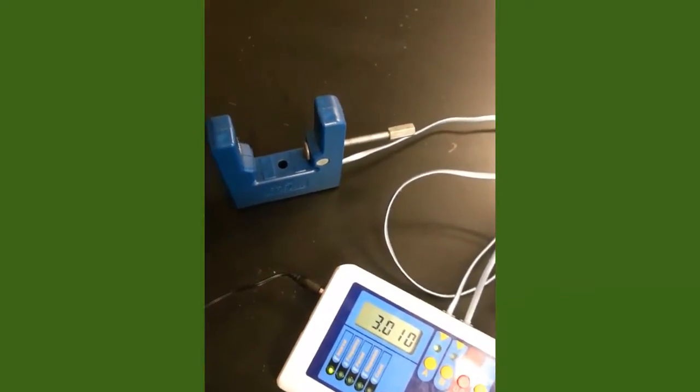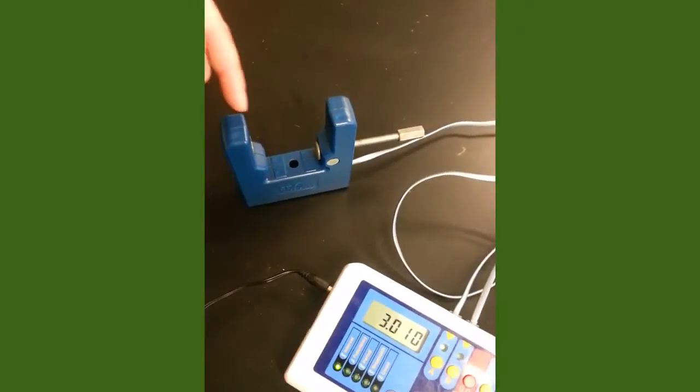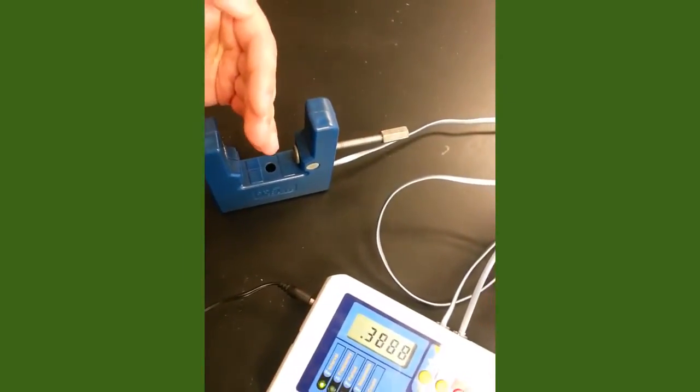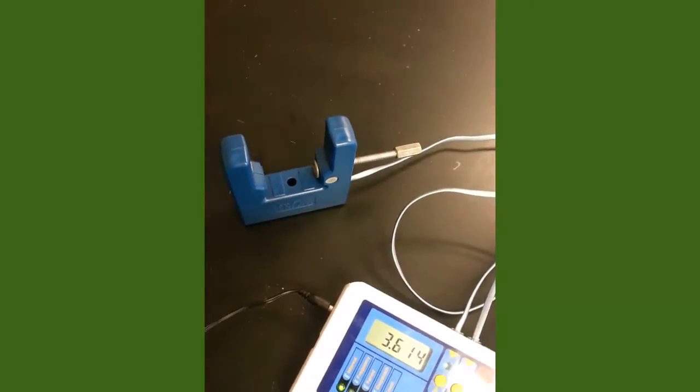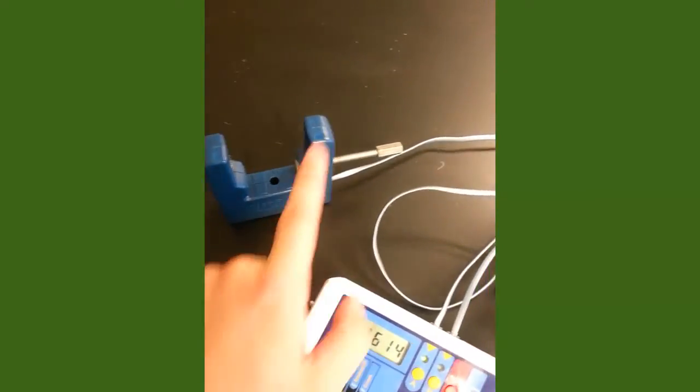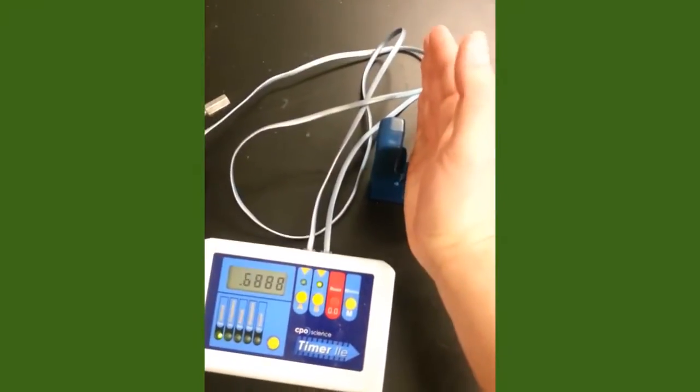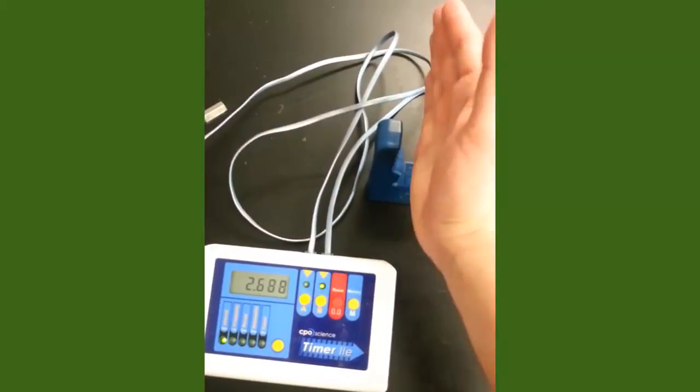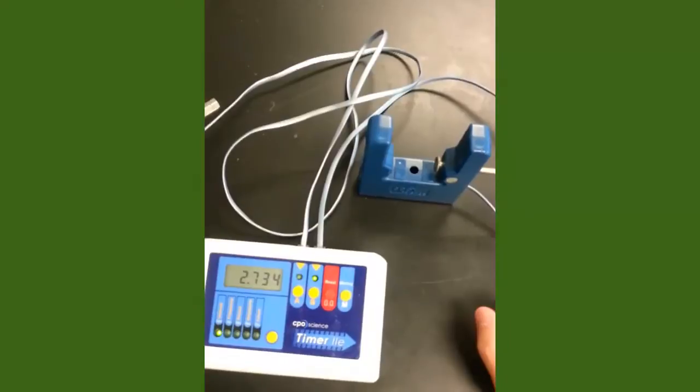Right in here there is an infrared beam. You can't see it. But if my fingers break the beam, the timer starts. If my fingers leave the photogate, the timer stops. The same thing happens with photogate B. My fingers go in, they break the beam of light, and then the beam of light is repaired and the photogate stops.